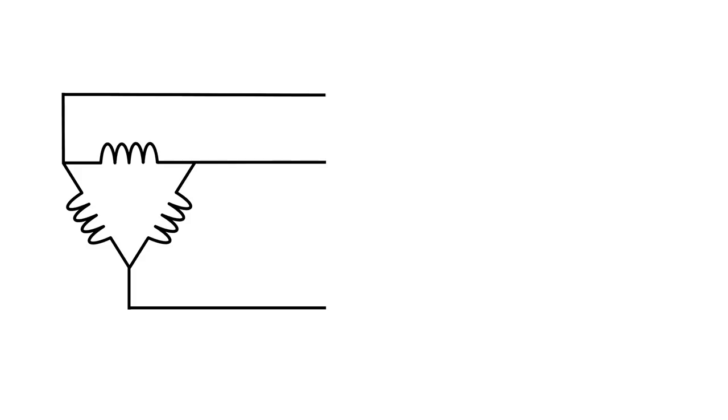Now the difference between a Y configuration and a delta is that we have the currents coming to a node here, two points to a node. And if you remember Kirchhoff's current law, you have to add currents that come to a node. So let's discuss how we're going to do that, because we can't just do it arithmetically, because these phases are not directly in line with each other. They're 120 degrees out of phase with one another.